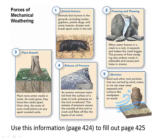There's also a release of pressure. As erosion removes materials from the surface of a mass of rock, the pressure on that rock is actually reduced. This release of pressure causes the outside of the rock to crack and flake, kind of like the peel of an onion — it peels off in layers and cracks. And that's what can happen to rocks as well.